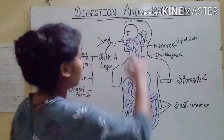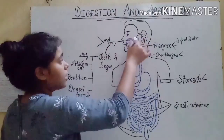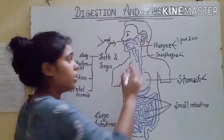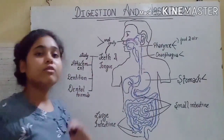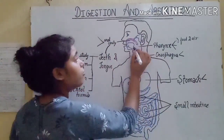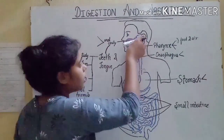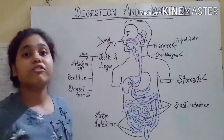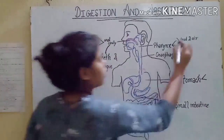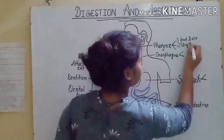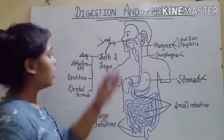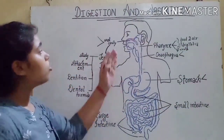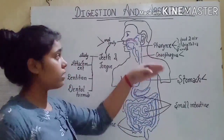Since the pharynx is the common pathway, air could enter the esophagus and food could enter the trachea. To prevent this while swallowing food, there is a cartilaginous flap called the epiglottis, which prevents the entry of food into the glottis — that is the opening of the windpipe. Similarly, to prevent the entry of air into the esophagus, there is a uvula-type structure.